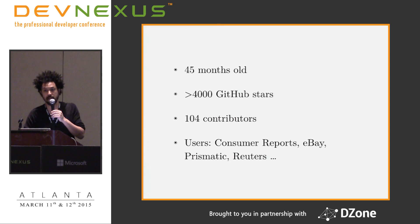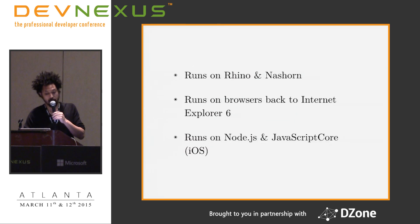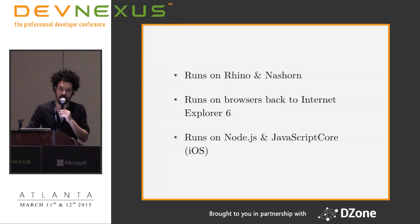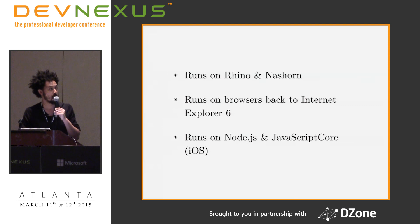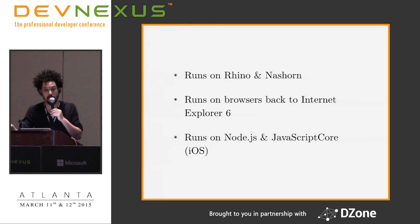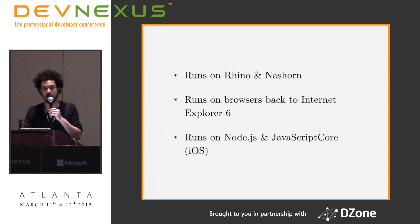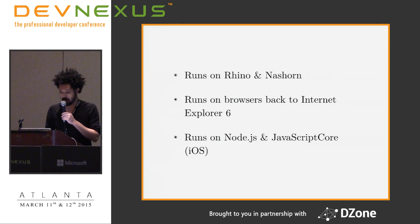It also now targets many things. It runs today on Rhino on the JVM, on Nashorn — Java 8's new high-performance JavaScript engine — on browsers going back to Internet Explorer 6. We take backwards compatibility extremely seriously, far more than most JavaScript-based projects. It runs on Node.js as well. People have already shipped apps via the JavaScriptCore engine, which allows you to bind directly into Objective-C. People are shipping ClojureScript-based iOS apps.